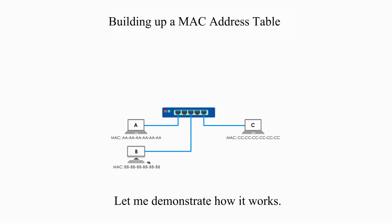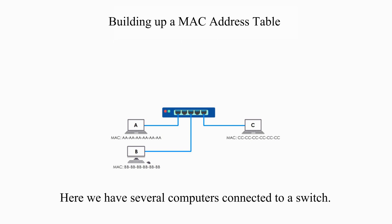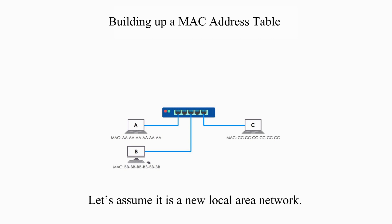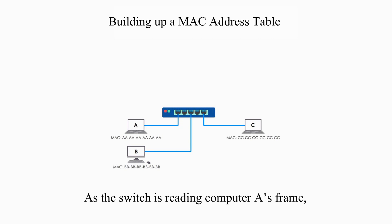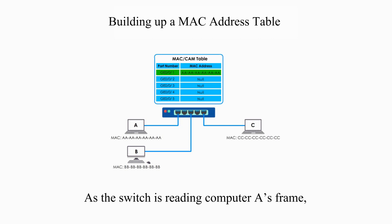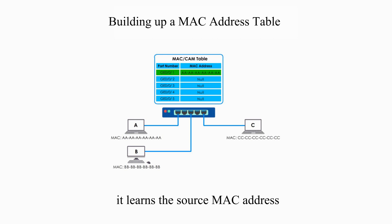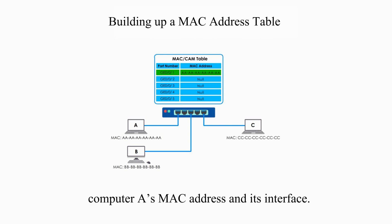Let me demonstrate how it works. Here we have several computers connected to a switch. Let's assume it's a brand new local area network. Computer A is sending a frame to Computer B. As the switch is reading Computer A's frame, it learns the source MAC address and adds a new entry to the table — Computer A's MAC address and its interface.